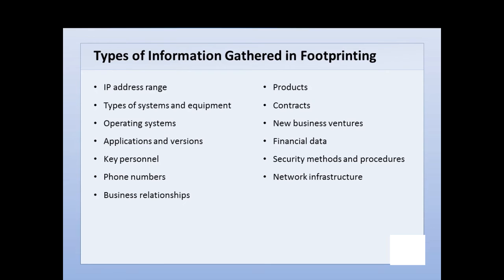We may look at contracts with other companies to determine what kind of business ventures they're planning together, products they're producing. We may look at financial data — a lot of this information is not directly relevant to the attack, but it can tell us things and may even help us build a target. Based upon financial data, we may decide there's money in this attack, so maybe they could afford blackmail or something like that. There are all kinds of information a hacker may want for different reasons.